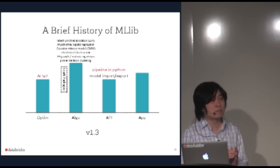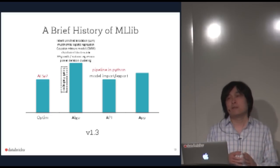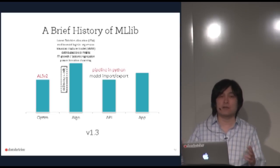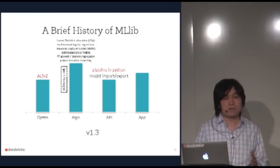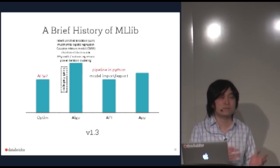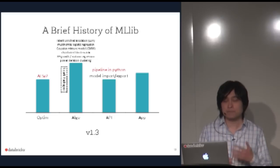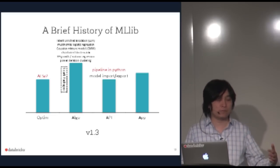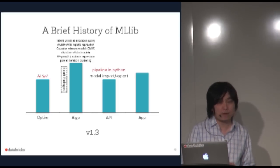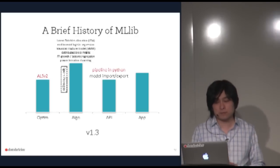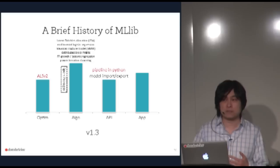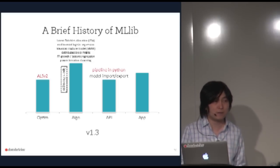Besides new algorithms, we also launched a website called Spark Packages — a third-party package index where developers can publish algorithms that are too niche to include in MLlib directly, and users can find and provide feedback on them. In this release we also have the Pipeline API in Python, model persistence for some models, and we rewrote the ALS algorithm so it can scale to billions of ratings — that's the second part of my talk today.